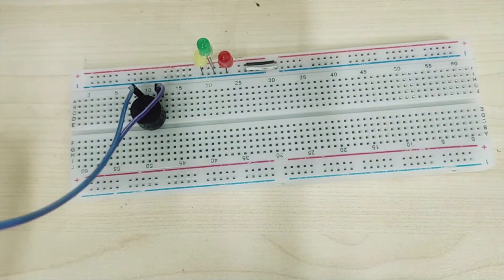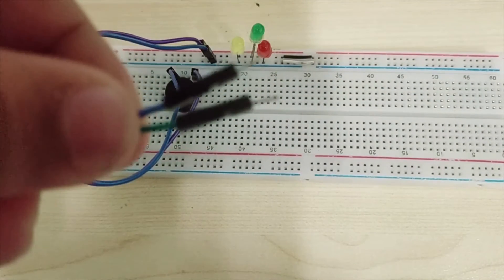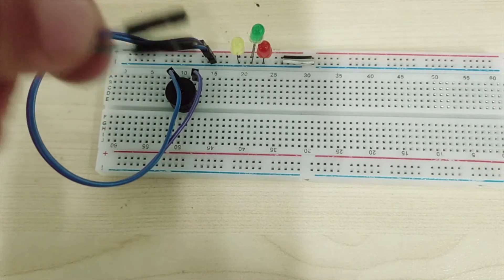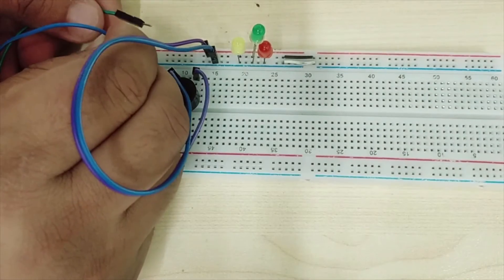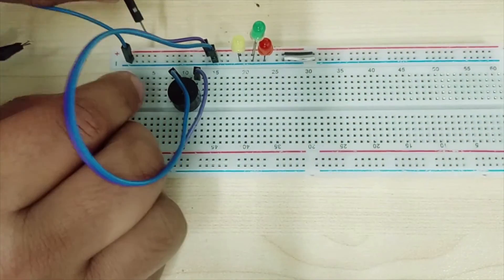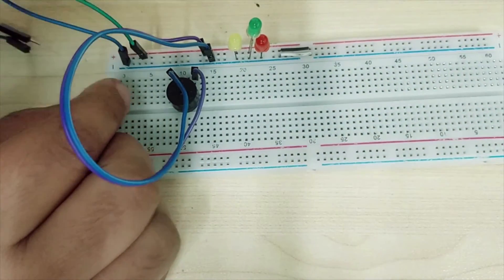Purple with the anode and blue with the cathode of the buzzer. Now we will take green and blue wire and connect the blue wire with the negative terminal and green with the positive terminal.